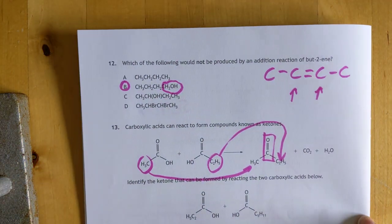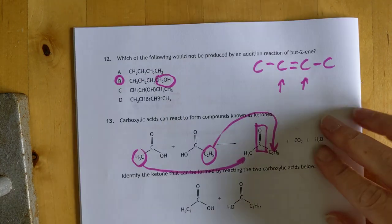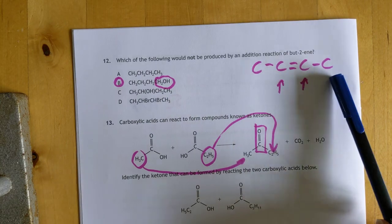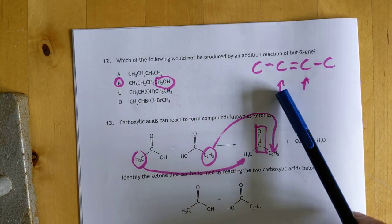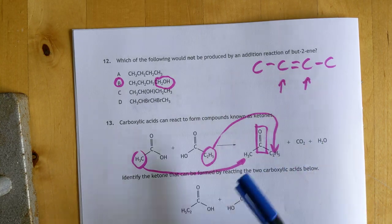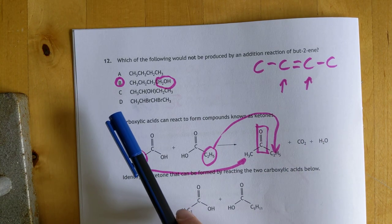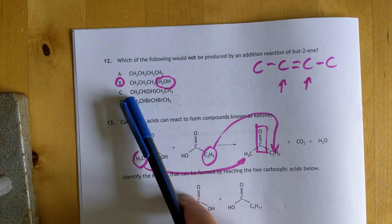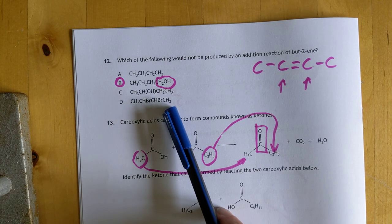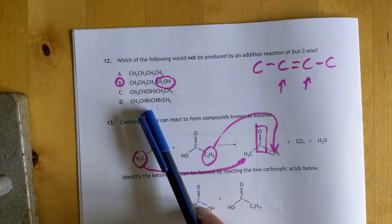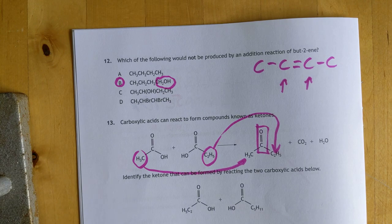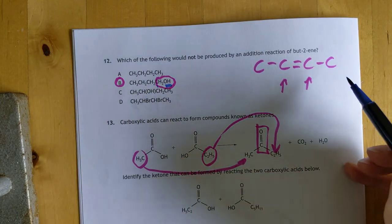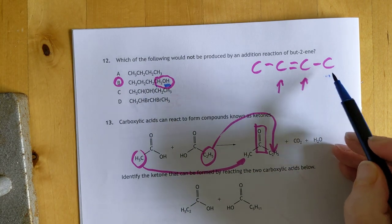Number 12: which would not be produced by an addition reaction of butene? I drew butene here. We're going to break this double bond and stick things onto these two carbons. This one could be produced if you added hydrogen. This one if you added water. This one if you added bromine. This one here is the correct answer. You cannot make that because the OH is on the end carbon, and there is no double bond in the end carbon.